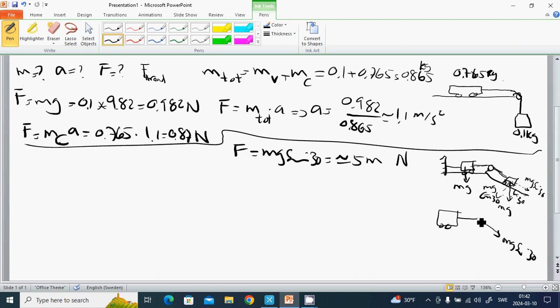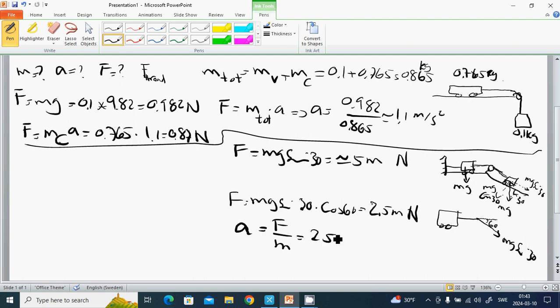And it is, this one is 60. Then it is the F equals Mg sine 30 multiplied by cosine 60, which is 50. And it is 2.5, 2.5 meters, newton.